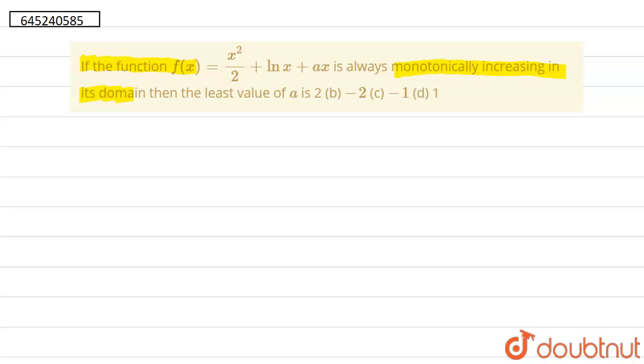So for this, we know that our function is monotonically increasing, then its derivative will be greater than or equal to 0